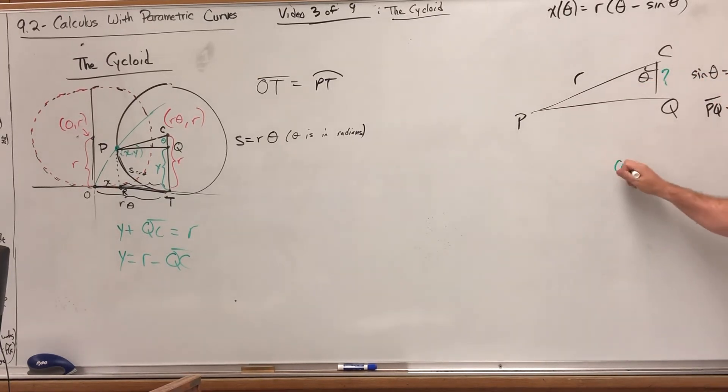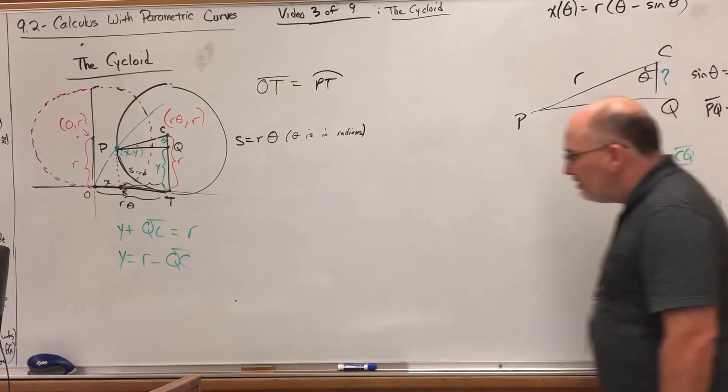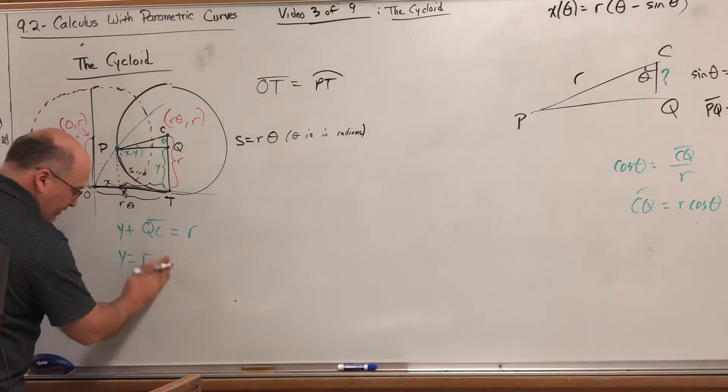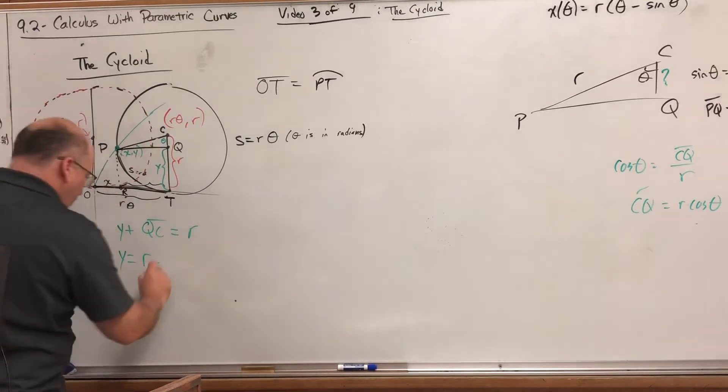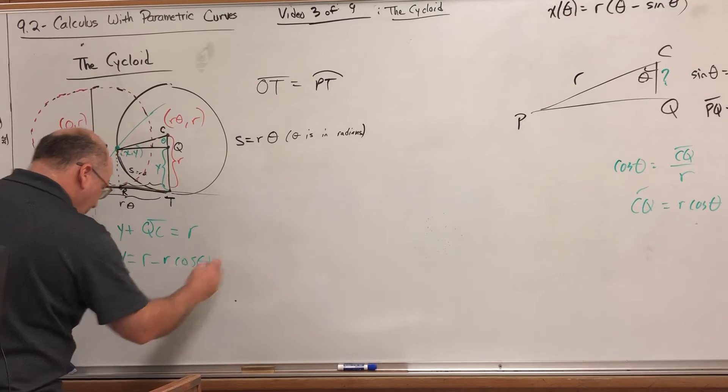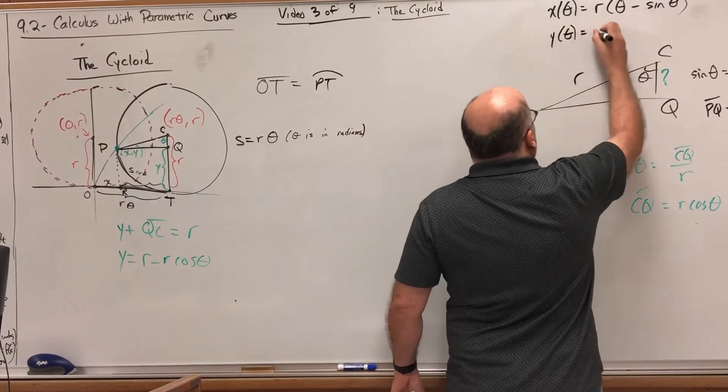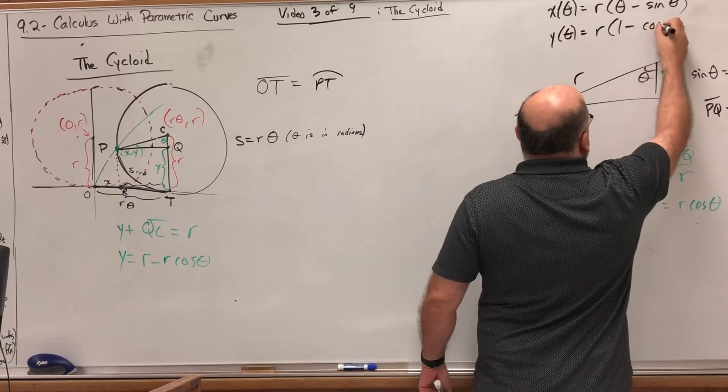Y plus CQ equals r, which means y equals r minus QC. We can use the same triangle, but now we're looking for CQ. That would be cosine. Cosine of that angle is the adjacent side, CQ, over r. That means CQ equals r cosine theta. If we factor the r out, y of theta equals r times one minus cosine theta.